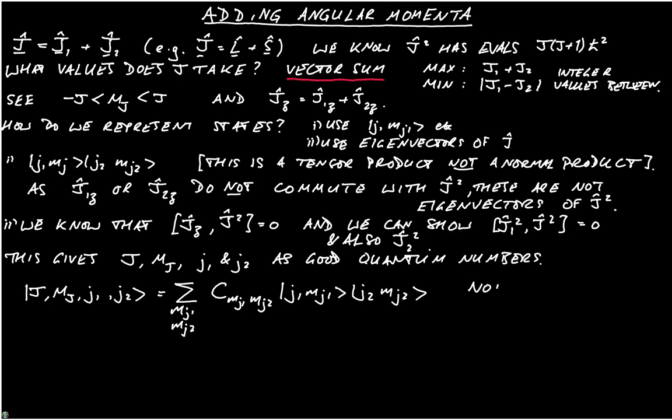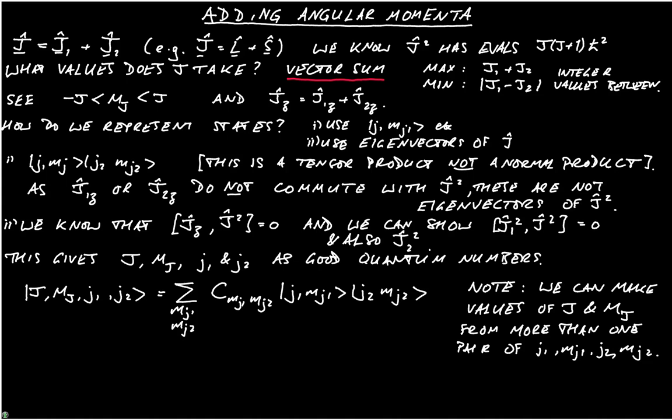Something you should note is that we can build or we can make values of j and mj from more than one pair of j1, mj1, j2, and mj2. Obviously there are going to be cases where you can only do it in one way, but generally we can add together different states.